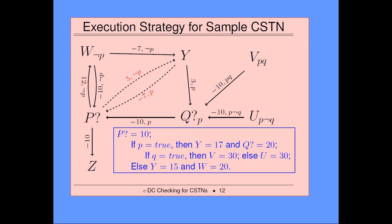We execute P at time 10. If P happens to be true, then we need to satisfy the constraint Y minus P greater than 7, so we can execute Y at 17. Then Q can be executed at 20. If Q happens to be true, we execute D; otherwise we execute U. On the other hand, if P is false, all that goes away. We just execute Y at 15 to satisfy the upper bound constraint, and then we can also execute W at 20. So we get an execution strategy that reacts to the observations.